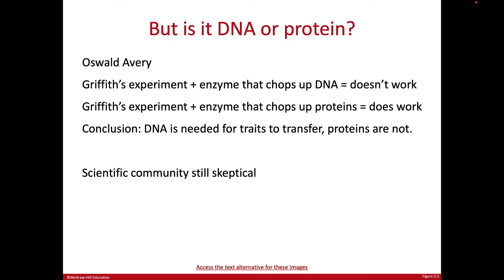The question remained: is that factor DNA or protein? Oswald Avery and colleagues did an experiment just like Griffith's, but they added enzymes that chopped up specific molecules. They added an enzyme that chops up DNA, and the transformation no longer worked — the mice didn't die. Then they did the same experiment chopping up proteins instead, and the mice did die, so the experiment worked. This tells us that when you destroy the DNA, transformation fails; when you destroy the protein, it still works. So DNA is the part that's important for passing the trait on.